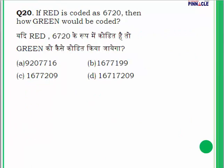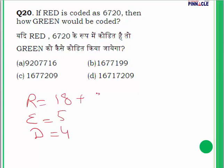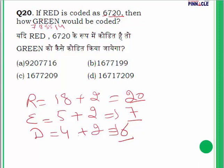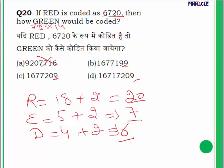Question number 20: RED is coded as 6720. R is at position 18, E at 5, D at 4. Adding 2 to each: 20, 7, 6 — which matches the code. For the new word, G is at position 7, R at 18, E at 5, N at 14. Adding 2: 9, 20, 7, 7 — double 7 is present only in option C. So option C is the correct answer.